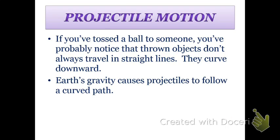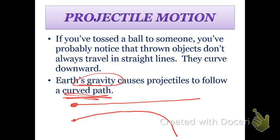At some point you probably have tossed some kind of object in the air. And hopefully you notice that when you toss something in the air, it doesn't go straight. Actually when you toss an object, it goes and then eventually curves downward. That's because Earth's gravity actually causes an object to make a curved path.